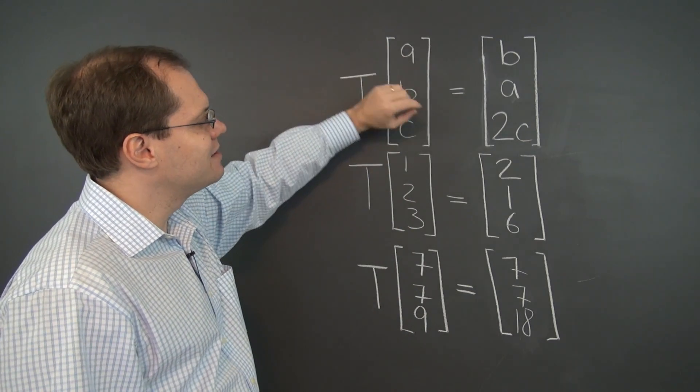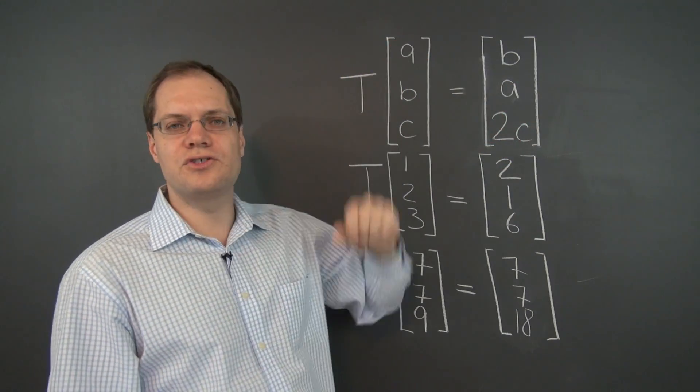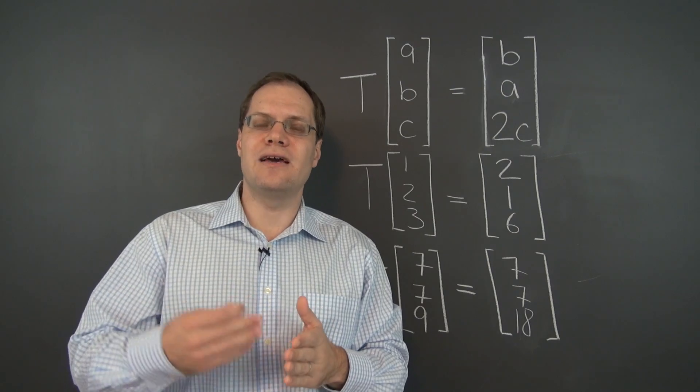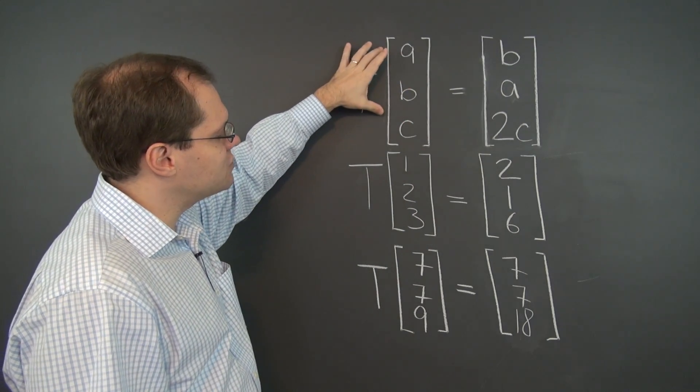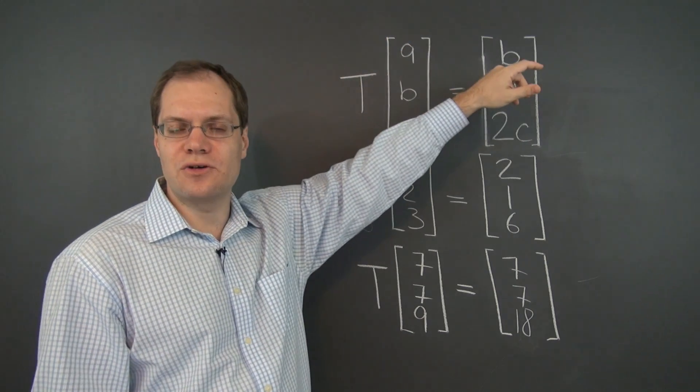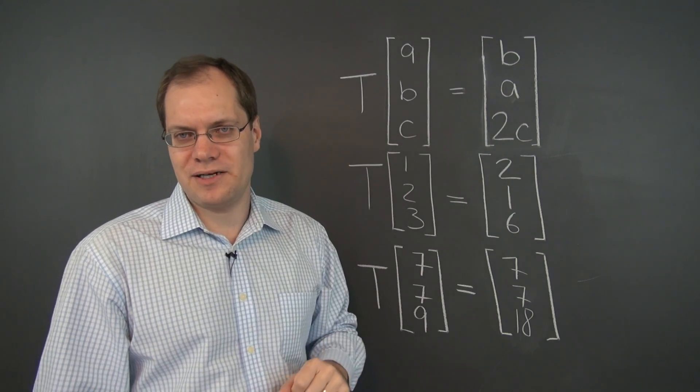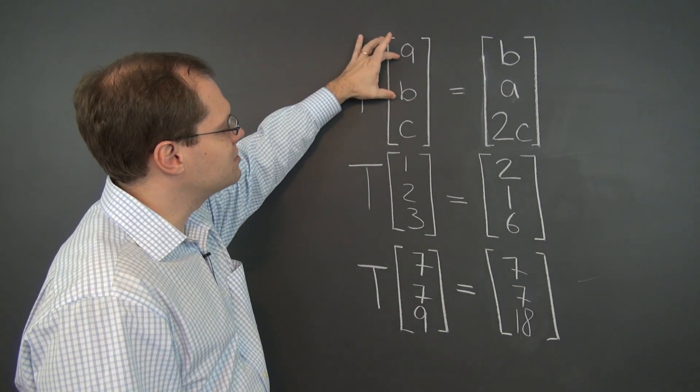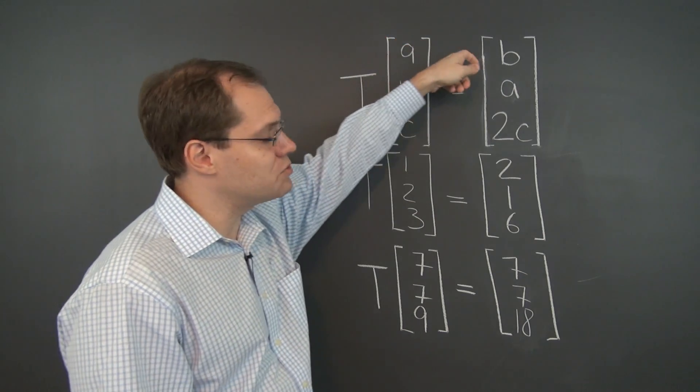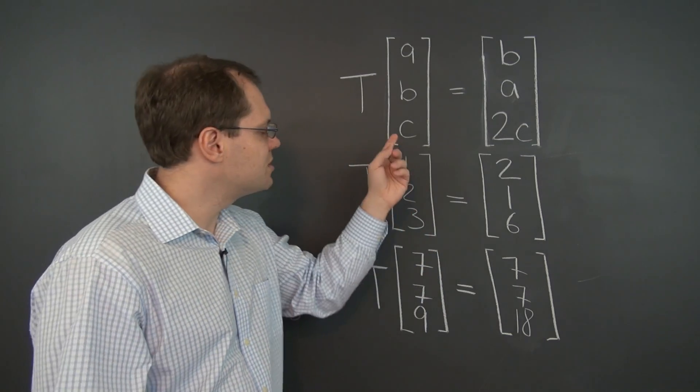Let's just talk about the first two entries and then we'll add the last one. Switch the first two entries. Let's test against scalar multiplication. If we were to multiply this vector by 2 first and then transform it, or transform it first and then multiply by 2, would it matter? Would we not get the same thing? Multiply whatever the numbers are by 2 and then switch them, or switch them first and then multiply by 2?